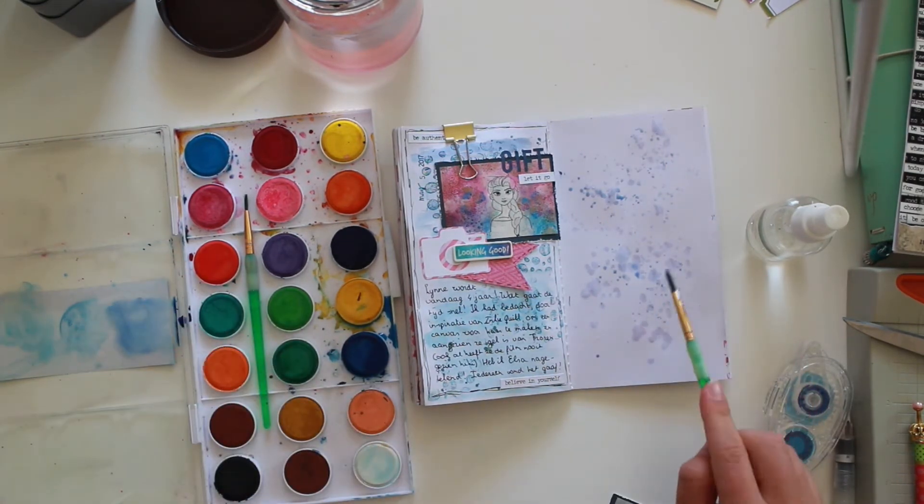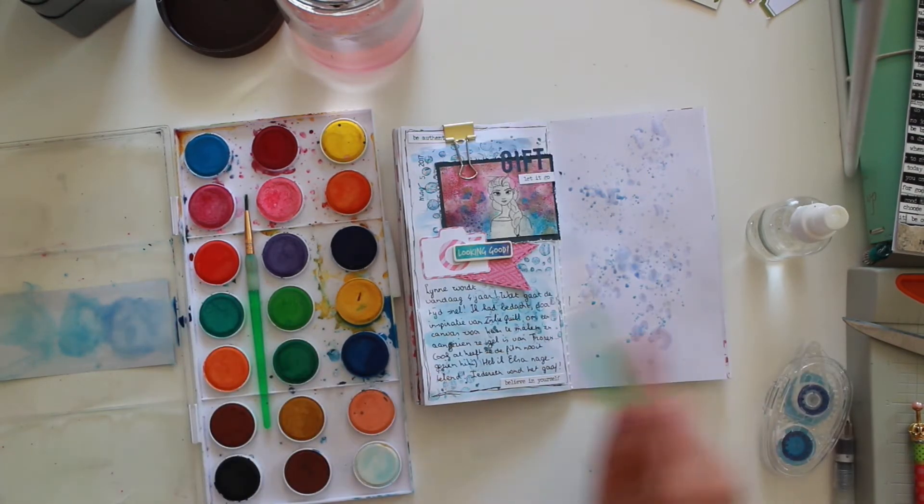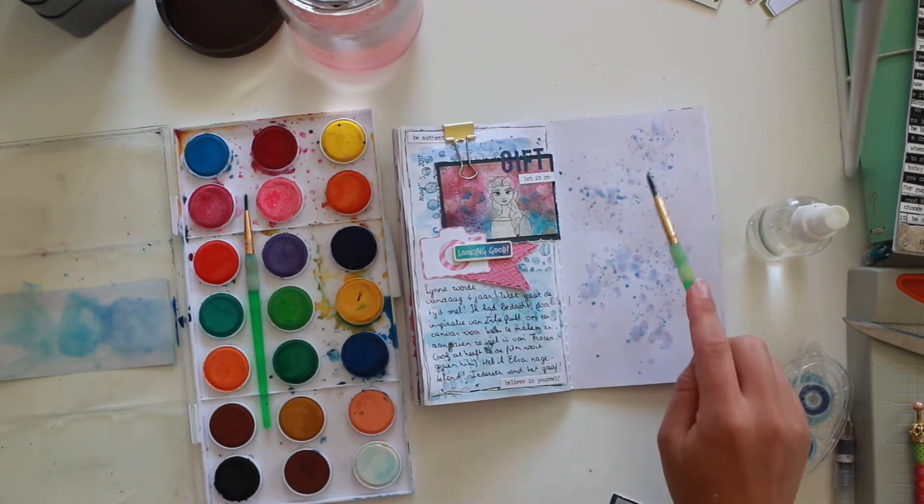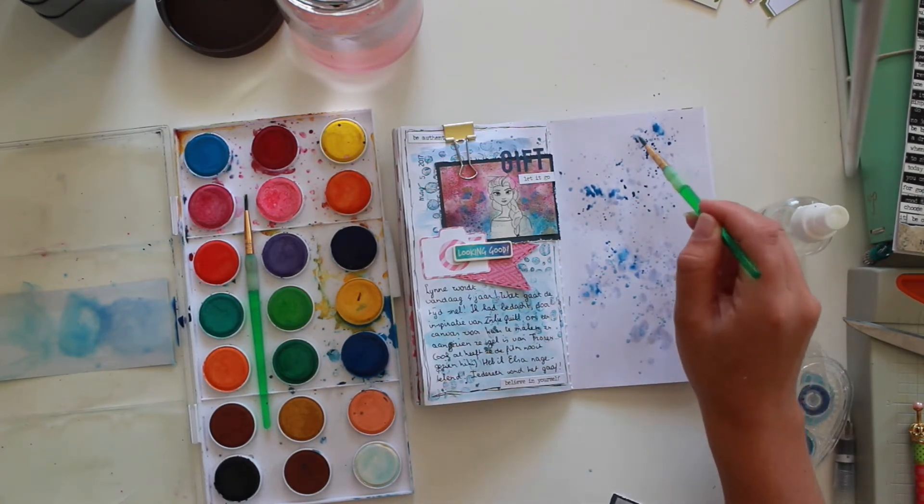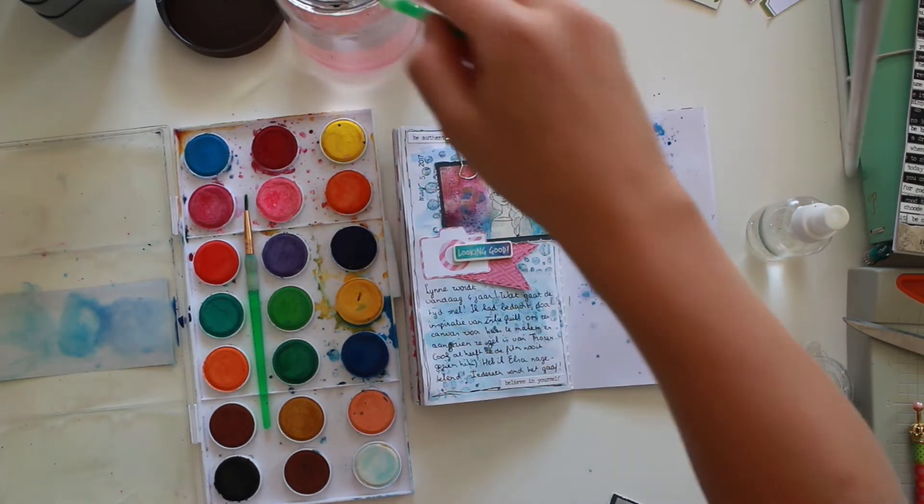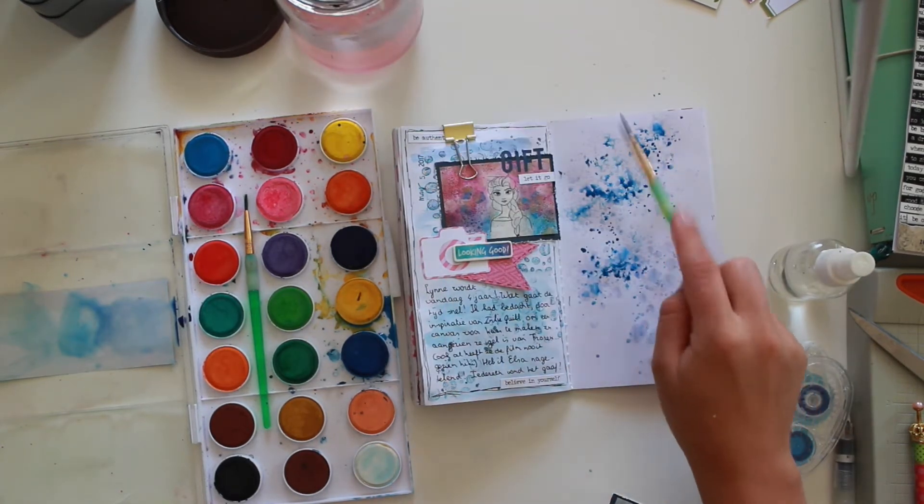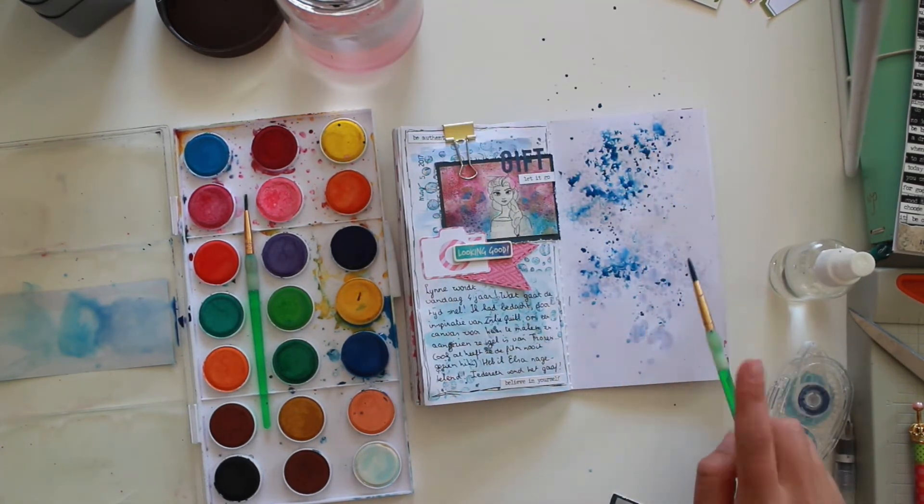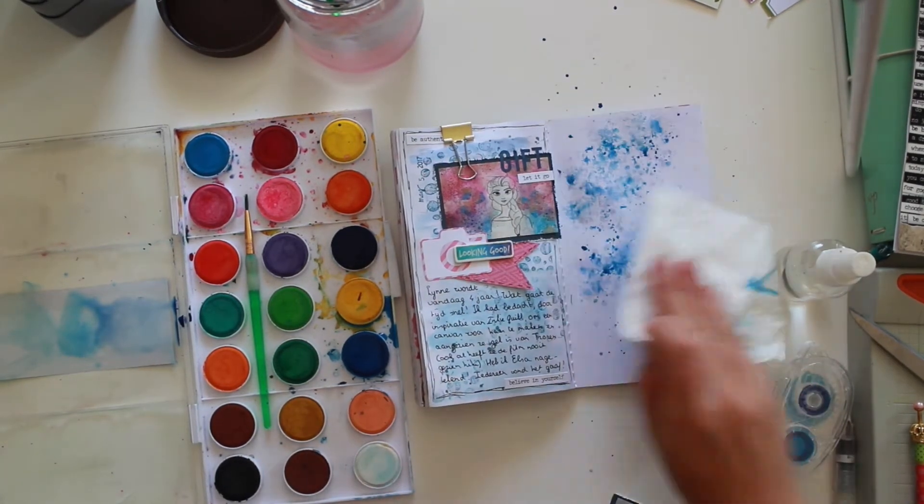Because I'm using my traveler's notebook and I did not prime it before with some gesso, the page takes up a lot of the water immediately. So you see me dip the brush into the water pools and you see me use the spray to get the colors moving. I really like this technique because you get the beautiful depth of the watercolors.